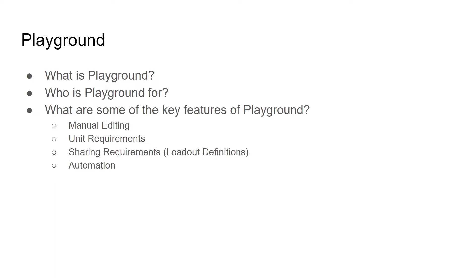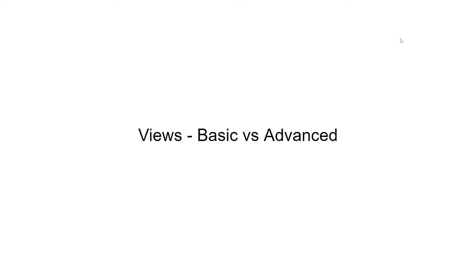We've also added features like unit requirements, where you can specify stat requirements — for example, I want this unit to be over 300 speed, use a crit avoidance arrow, or have an offense set. Playground will highlight when a unit doesn't meet those requirements. Those requirements are called loadout definitions. Finally, there's automation — once you define unit restrictions, you can hit the automate button and it will try to find the best set based on your weights.